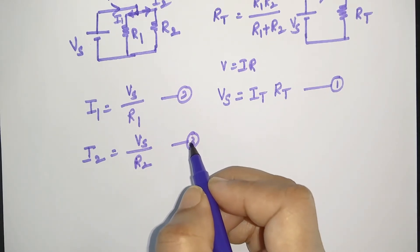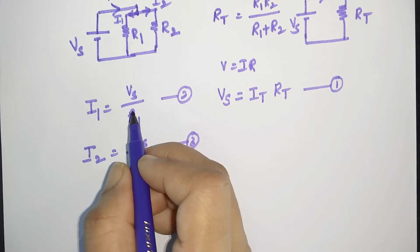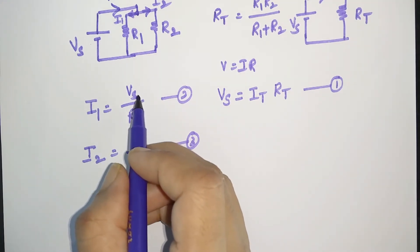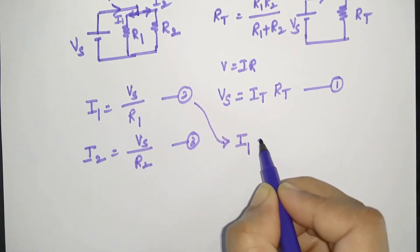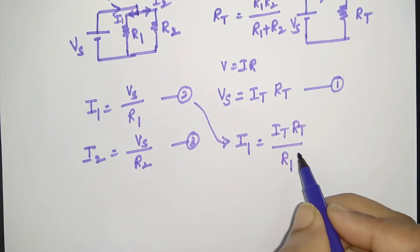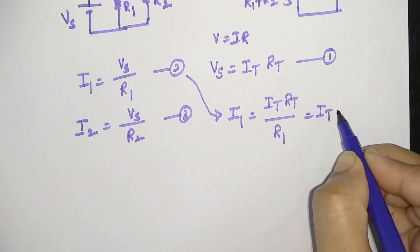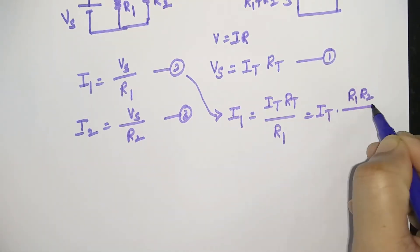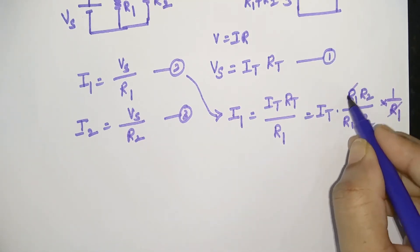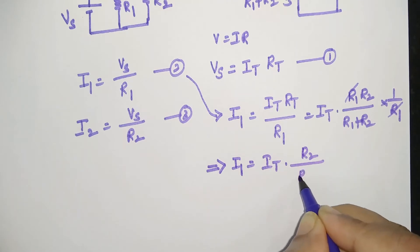Now we are trying to write the relation for I1 without using voltage. Starting from equation 2: I1 = Vs/R1. Instead of Vs, we can write IT · RT, so I1 = IT · RT / R1. Substituting RT = R1·R2/(R1 + R2), we get I1 = IT · [R1·R2/(R1 + R2)] · (1/R1). R1 cancels, giving I1 = IT · R2/(R1 + R2).